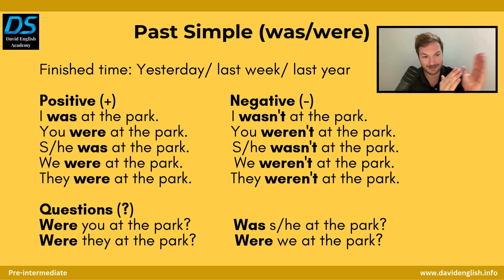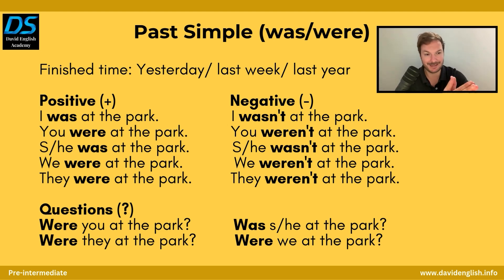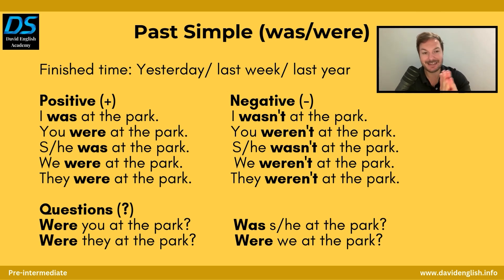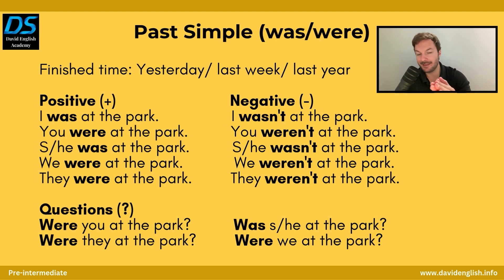Going over to the negative form for was and were: I wasn't at the park. You weren't at the park. She or he wasn't at the park. We weren't at the park. They weren't at the park.